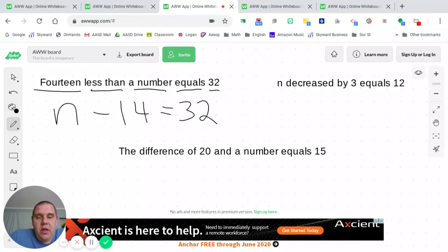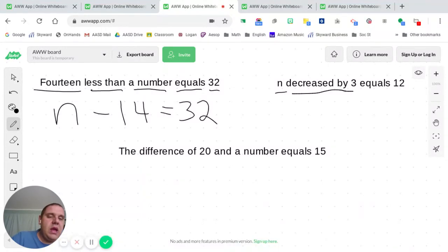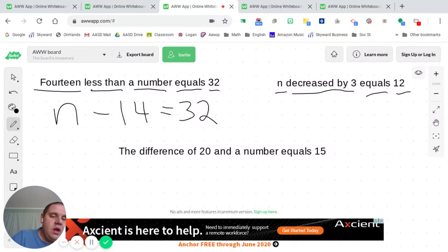Let's take a look at another one. N decreased by 3 equals 12. Obviously the equals 12 is pretty self-explanatory. N decreased by 3. This one tells you which order to go in. You're taking N and you're decreasing it by 3. So that means you're going to take N minus 3 equals 12.